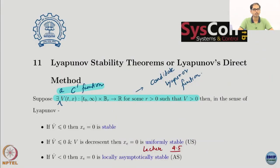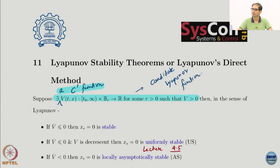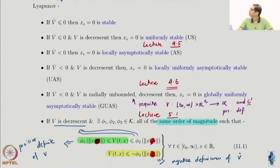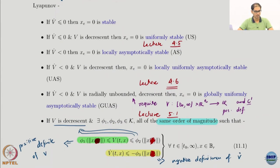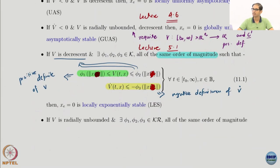To recap, we were doing these Lyapunov stability theorems. We have already defined what they are and what the stability notions are, and now we have gone ahead and started to discuss the Lyapunov stability theorems. We started with the more basic version — stability, uniform stability, asymptotic stability, uniform asymptotic stability, global uniform asymptotic stability, and the two notions of local and global exponential stability.